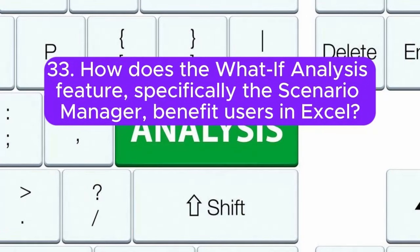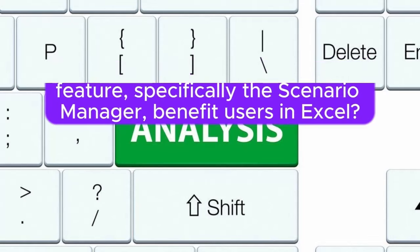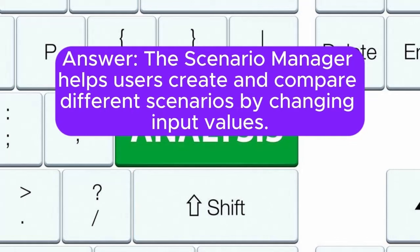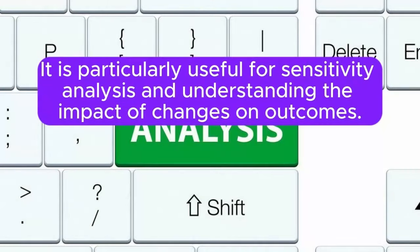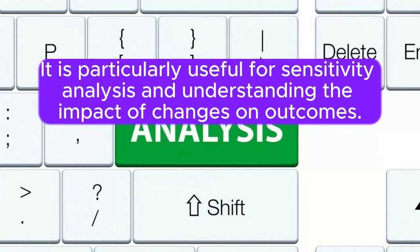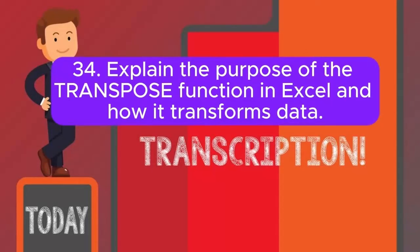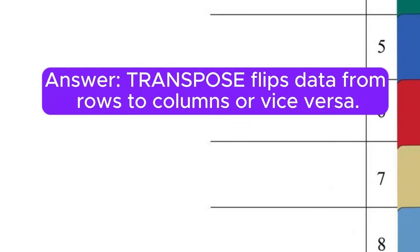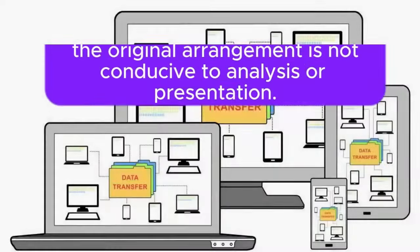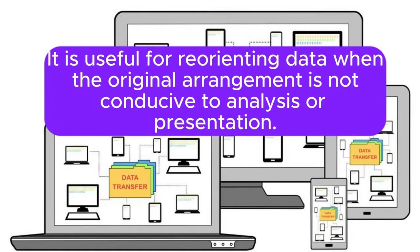Question 33: How does the what-if analysis feature, specifically the Scenario Manager, benefit users in Excel? The Scenario Manager helps users create and compare different scenarios by changing input values. It is particularly useful for sensitivity analysis and understanding the impact of changes on outcomes. Question 34: Explain the purpose of the TRANSPOSE function in Excel and how it transforms data. TRANSPOSE flips data from rows to columns or vice versa. It is useful for reorienting data when the original arrangement is not conducive to analysis or presentation.